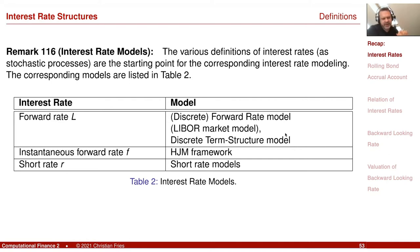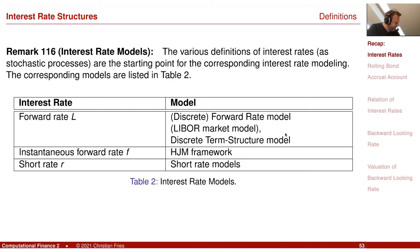A puzzling aspect is that short rate models only model a single point while the other models model a curve — discretized, continuous, or a continuum. So where is the information about future interest rates at every point in time in a short rate model? We will have the answer in a later session. Short rate models are a special class with a strong assumption: we describe the short rate under the risk-neutral measure with respect to the corresponding numéraire.